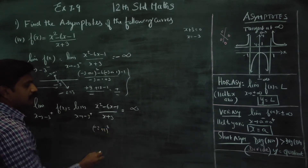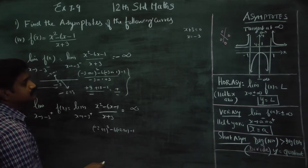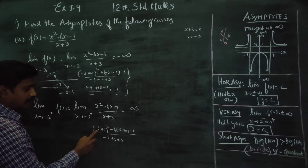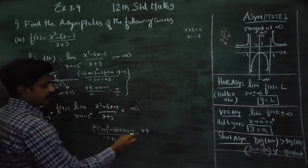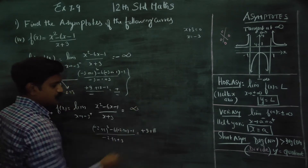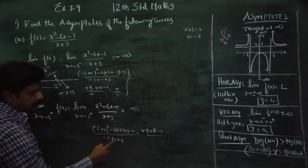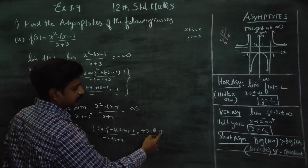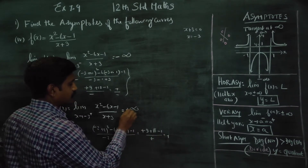Taking x as minus 2.99 — just slightly greater than minus 3 — we compute: minus 2.99 squared gives approximately 9 (positive), minus times minus 2.99 gives approximately positive 18, minus 1, divided by minus 2.99 plus 3, which is a small positive number. The numerator is positive and the denominator is a small positive number, therefore the answer will be plus infinity.